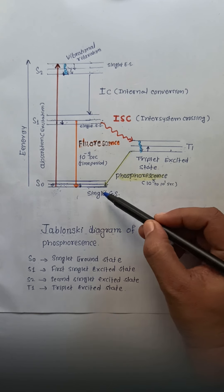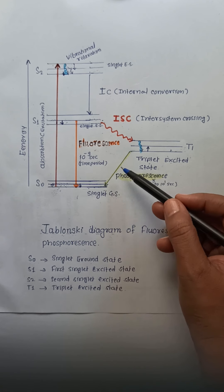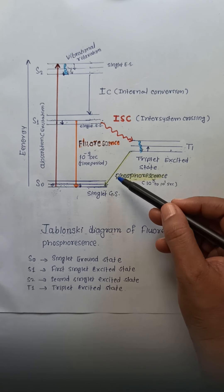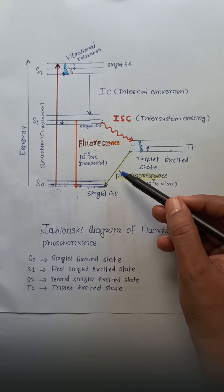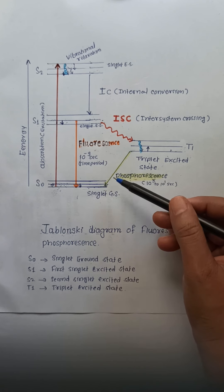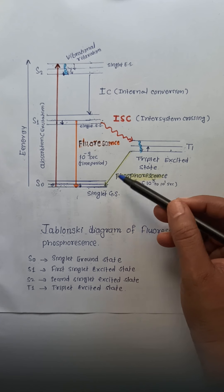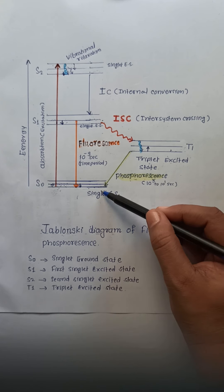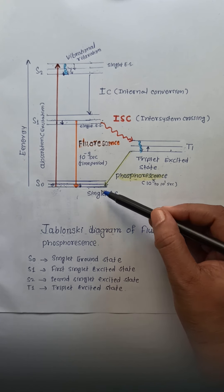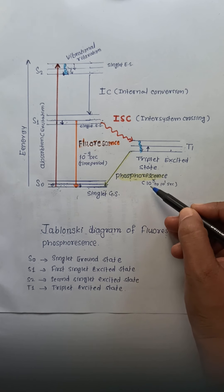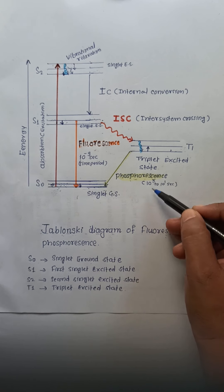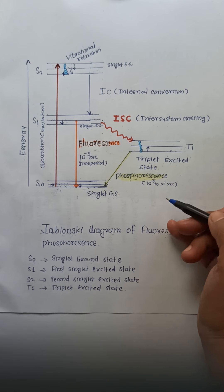In phosphorescence, we can see a transition from T1 to S0. It is the phenomenon of emission of radiation when there is a transition from the triplet excited state to the singlet ground state, and it requires a time period of 10³ to 10¹ seconds.